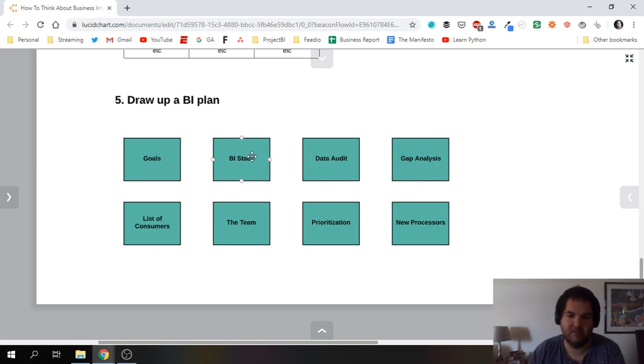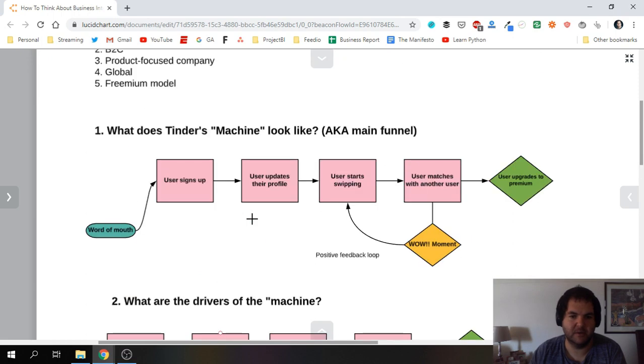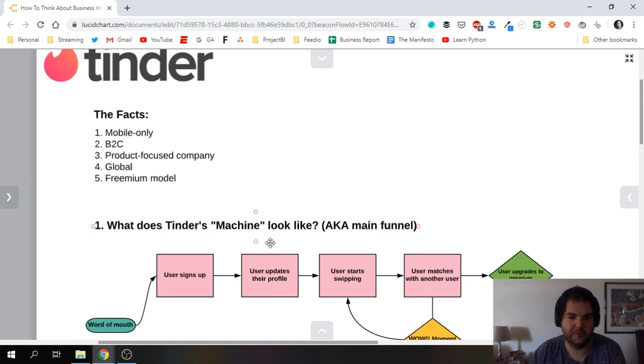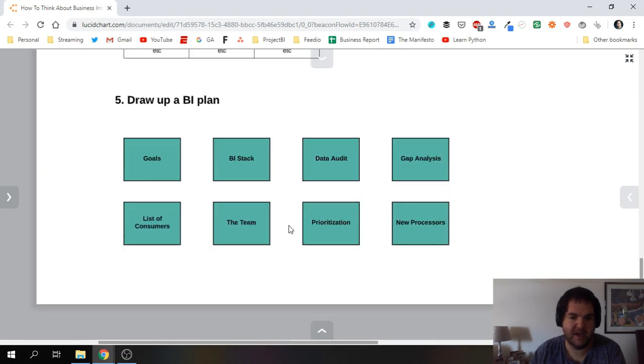BI stack - you basically want to decide on the technological stack that would make the most sense for your business. For Tinder, if they're using something like Firebase for app development and analytics, then I would go with that. I would go with Google BigQuery for my data warehouse and then most likely something like Tableau for data visualization. So that would be my BI stack, but it obviously changed depending on certain factors like budget, the tools you already have, even your geography and the types of tools which are popular in your market might affect that.